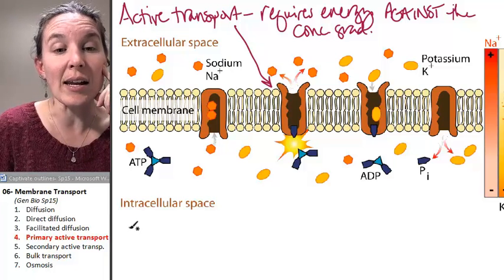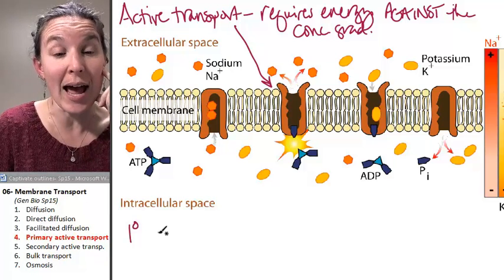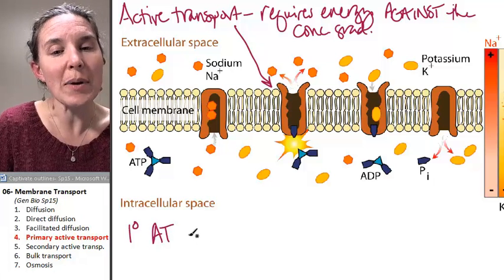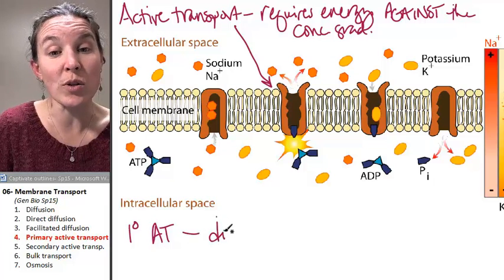We're going to look at a process called primary active transport which basically requires a direct source of energy.